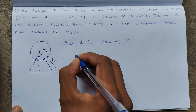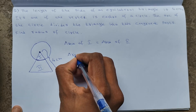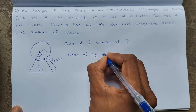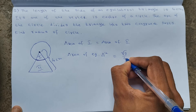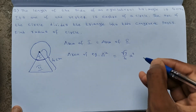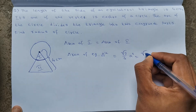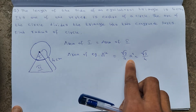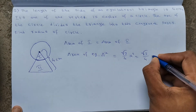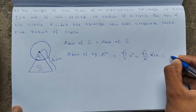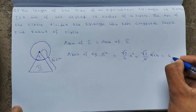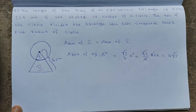We need to find the radius of the circle. First, the area of the equilateral triangle = (√3/4)a². With a = 4: (√3/4) × 16 = 4√3 cm².